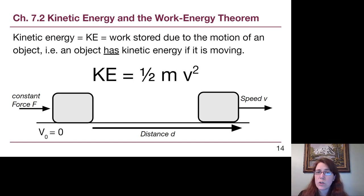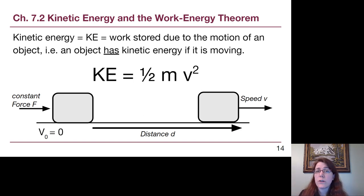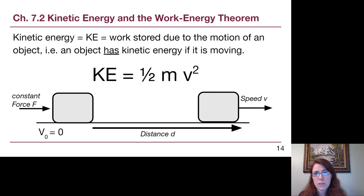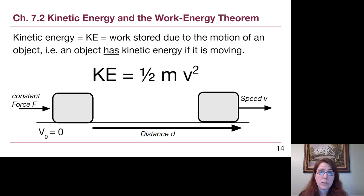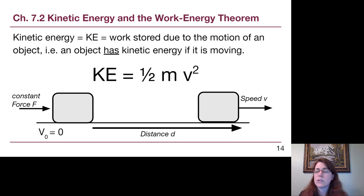Kinetic energy equals one-half times the mass times the speed squared. The derivation is on a handout you should look at — it uses physics we've already been talking about: forces, Newton's second law (F = ma), and kinematics from Chapter 2, specifically the position-velocity equation. As long as an object is moving, it has kinetic energy.